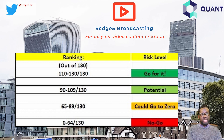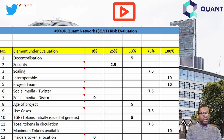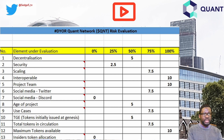What scores did we give to Quant Network? Decentralization: 5 out of 10. Security: 2.5 out of 10. Scaling: 7.5 out of 10. Interoperability: 10 out of 10 — Quant Network is designed for full interoperability. Project team: 10 out of 10. Twitter: 7.5 out of 10. Discord: 0 out of 10, as Quant Network has no official Discord account. Edge of the project: 5 out of 10. Use cases: 7.5 out of 10. Tokens issued at launch: 5 out of 10. Tokens in circulation: 7.5 out of 10. Maximum tokens available: 10 out of 10. Insider token allocation: 0 out of 10, as our threshold is 30% and Quant Network's insider allocation sits at over 68%.